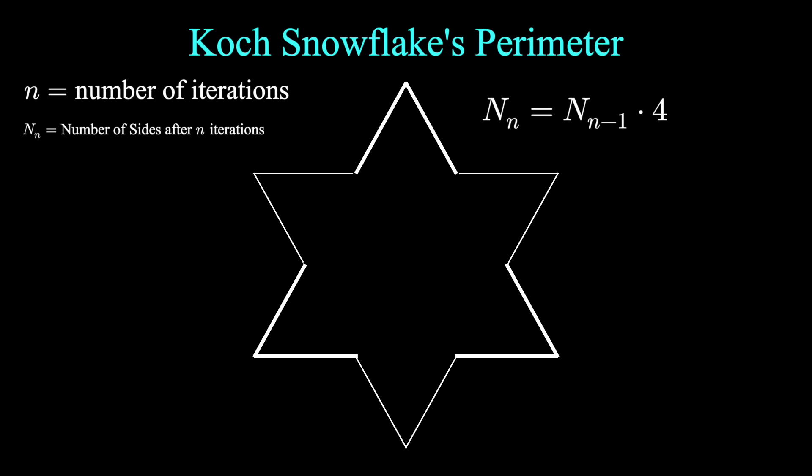We start with three sides to begin with. Every iteration, we multiply the number of sides by four. So the number of sides of the nth iteration should be three times four to the n.